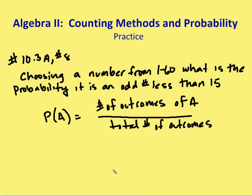And that includes both a and not a. So the total number of outcomes is going to be 60, right? I have 60 numbers, I have 60 possible outcomes.